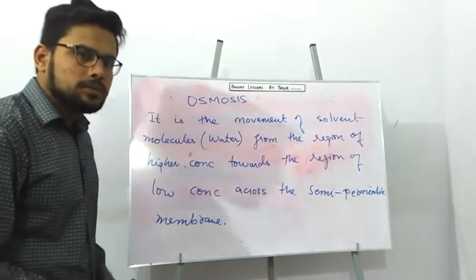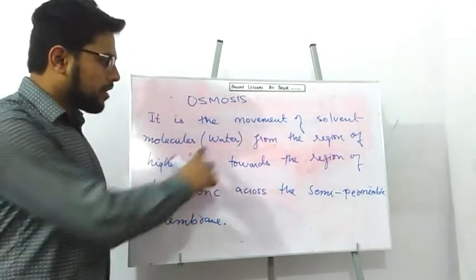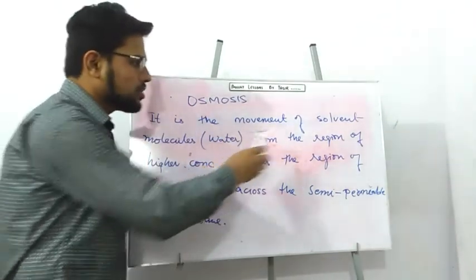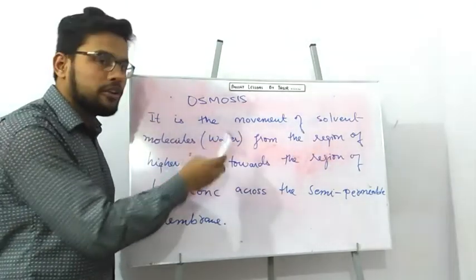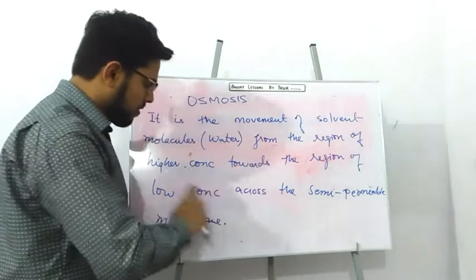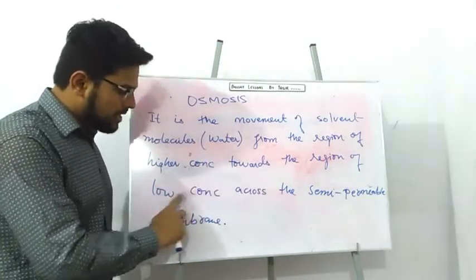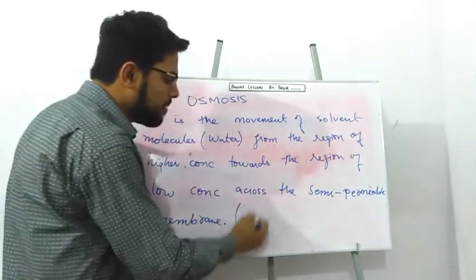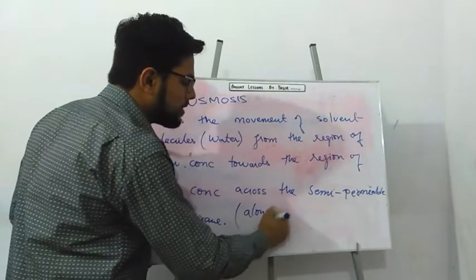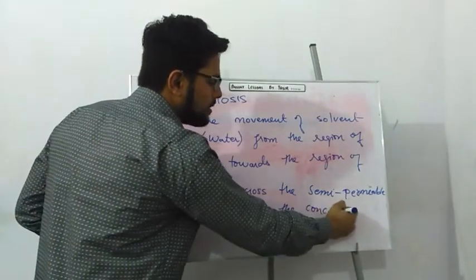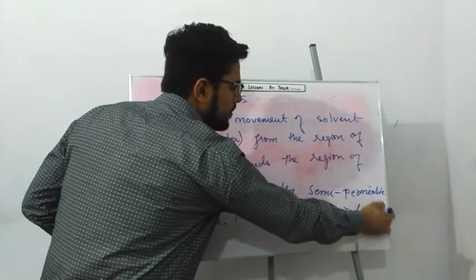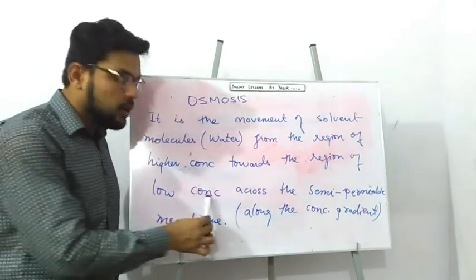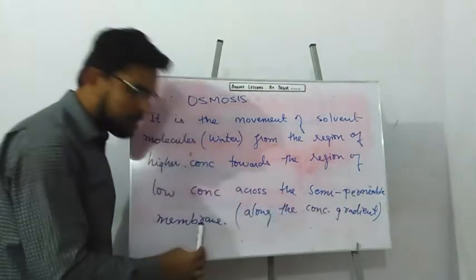Water acts as a solvent in the biological system, so in osmosis we refer to the movement of water molecules. They move from the region of their higher concentration to the region of their lower concentration — that is, along the concentration gradient — across the semipermeable membrane.